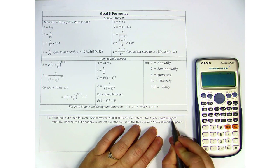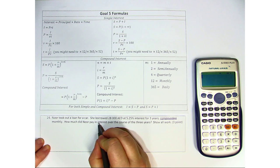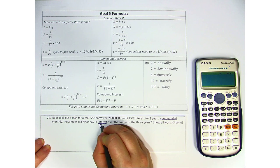Okay, so we have that word compounded. That's one of our keywords. How much did Noor pay in interest over the course of the three years? We must show all work. So we're looking for interest.